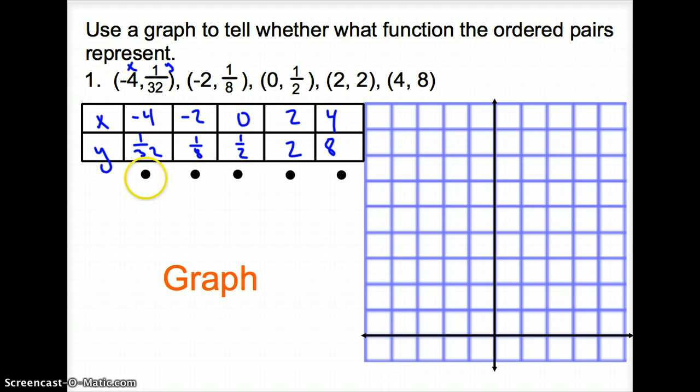Now, negative 4, over 1 32nd, or up 1 32nd, so I'm going to go from my origin, I'm going to go over 1, 2, 3, 4, and go up 1 32nd, which is really, really small in this graph. So I'm going to almost put it right there. It's slightly off the x-axis. Next is negative 2 1 8th. So I go over negative 2, up 1 8th, so I'm going to put it just slightly higher. 0 1 half, so I'm at 0, I go up 1 half, and there looks like 1 half.